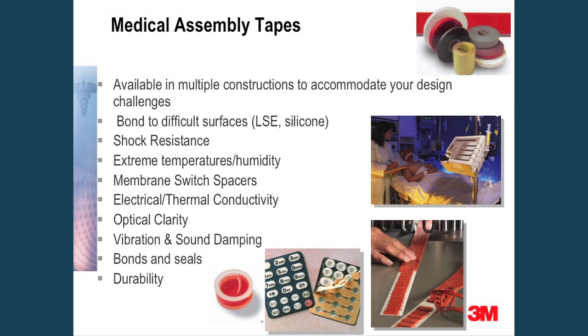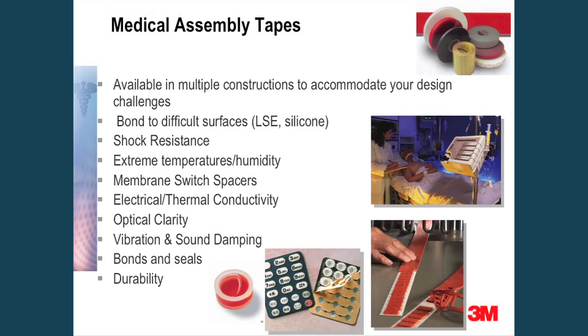Another medical device solution is our medical assembly tapes. These are available in multiple constructions to accommodate your design challenges. These are pressure sensitive adhesives requiring a clean surface on the substrate and minimal pressure of 25 pounds per square inch. They can bond to challenging surfaces such as low surface energy plastics — polypropylenes, polyethylenes — as well as hard to bond to silicone without the use of a primer. They offer shock resistance in cold drop tests, extreme temperature capabilities, and extreme humidity environments.